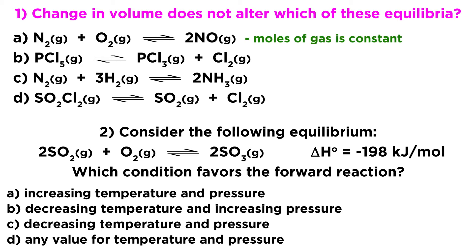The only way for a change in volume to have no effect on the equilibrium is if the number of moles of gas particles on each side is the same. That's got to be option A — we've got two moles of gas on the left and two moles of gas on the right, so there's no way for a change in volume to have any impact here. With the other options: B has one on the left and two on the right; C has four on the left and two on the right; D has one on the left and two on the right. So a change in volume would have an impact on each of those.